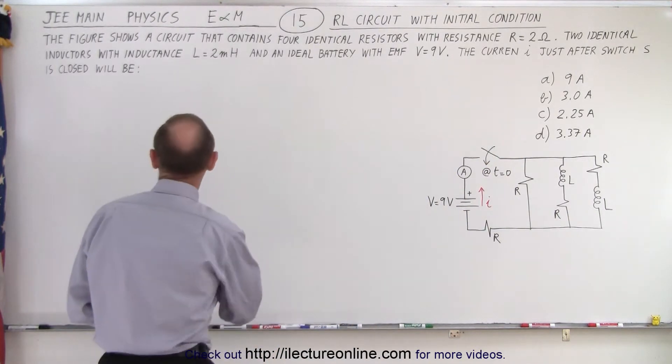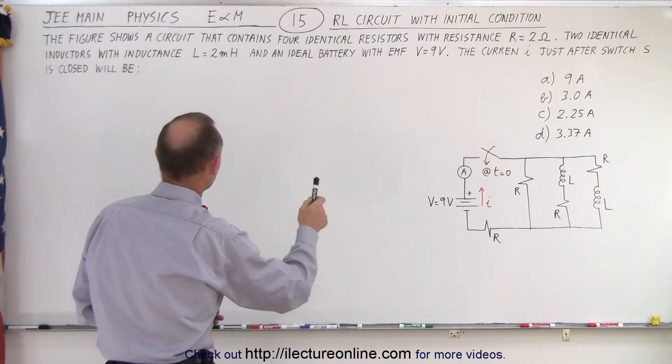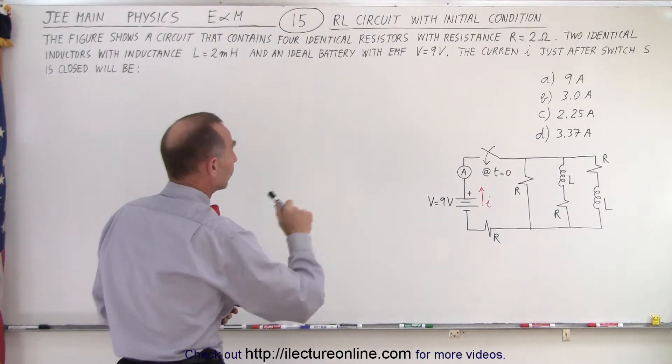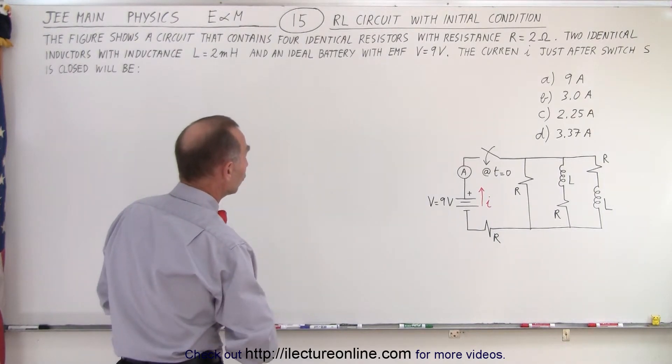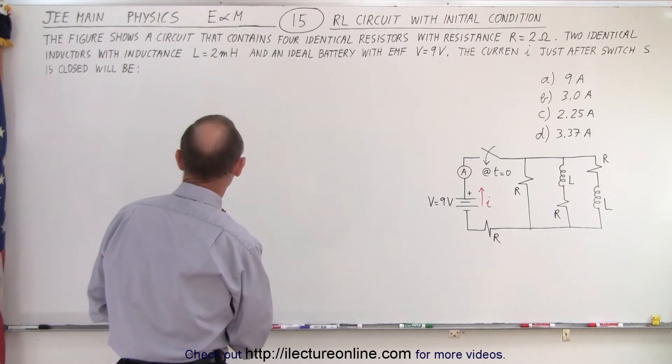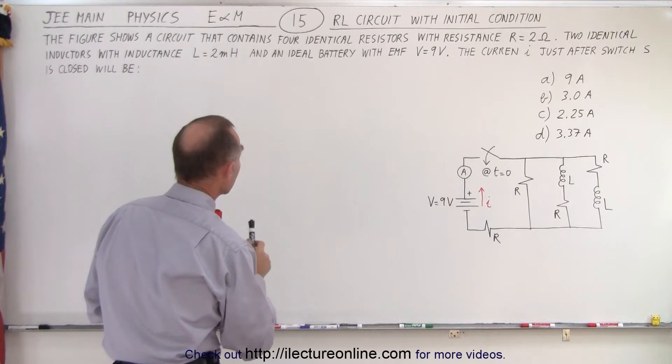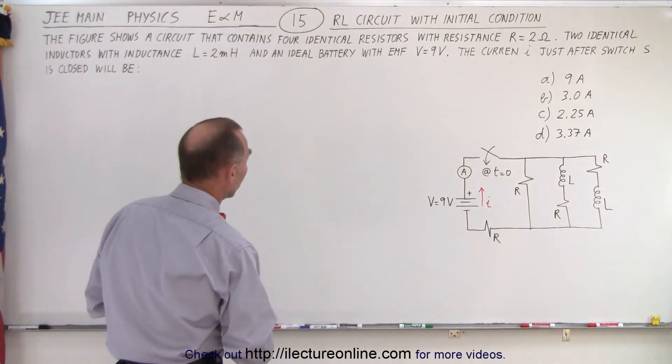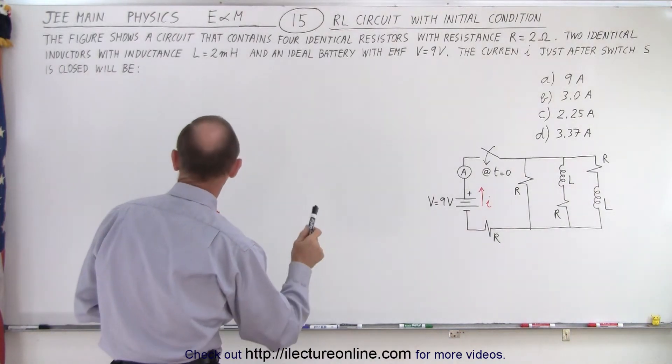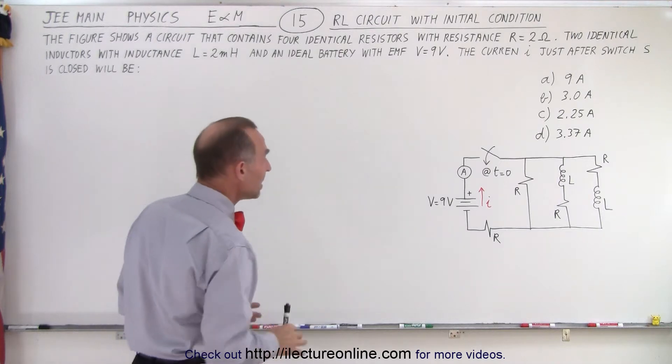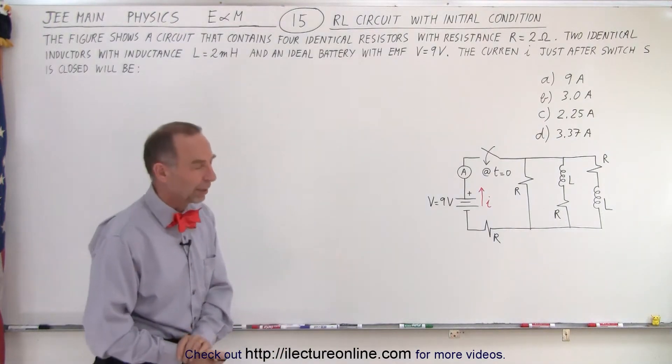So let's read the problem. The figure shows a circuit that contains four identical resistors with resistance two ohms and two identical inductors with inductance two millihenries and an ideal battery with an EMF of nine volts. The current I just after switch S is closed will be, and it gives us four possible answers.